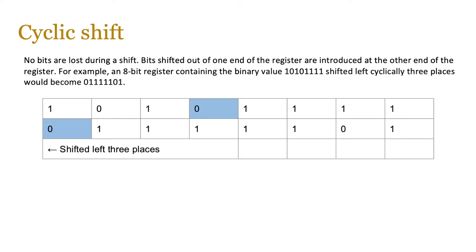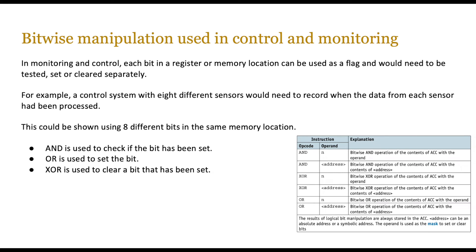That covers shifts, which mostly appear in assembly language questions. We're also going to look at bitwise manipulation, which is more useful in control and monitoring contexts. In a monitoring and control system, each bit in a register or memory location can be used as a flag and may need to be tested, set, or cleared separately. For example, a control system with eight sensors could use eight different bits in one memory location — one bit indicating a sensor is enabled, another to stop data transmission. Bitwise operators AND, OR, and XOR can check if a bit is set or use XOR to clear it.